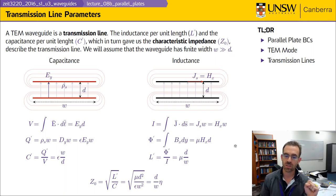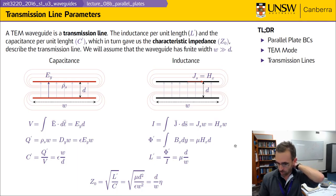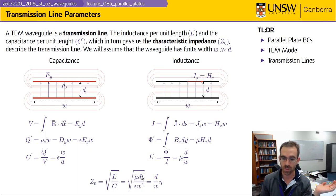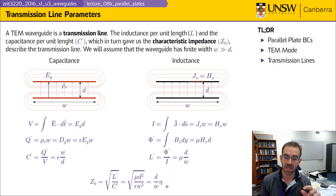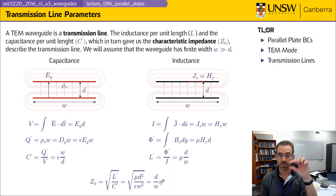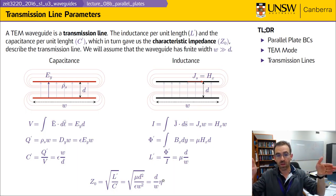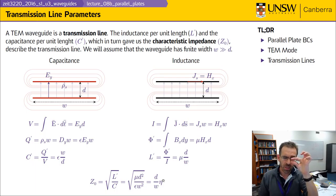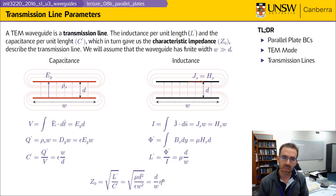The characteristic impedance of the transmission line is the square root of L' divided by C', which equals the square root of mu over epsilon times d over W. So the characteristic impedance of this parallel plate guide is the wave impedance of the material, eta, multiplied by d over W. The closer together the plates are, or the wider the plates are, the lower the impedance.